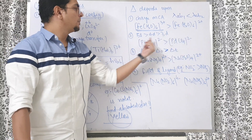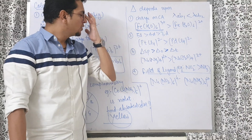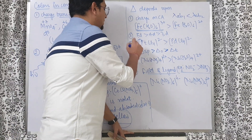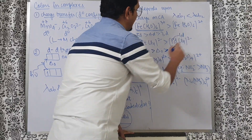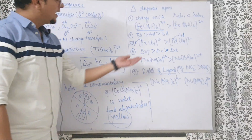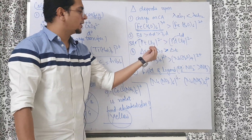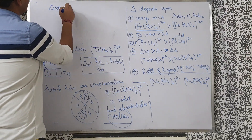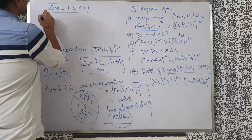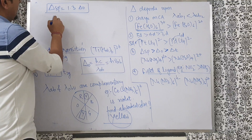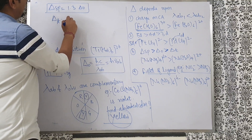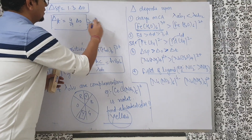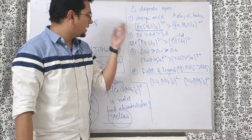The second factor: 5d elements have more Δ than 4d, which have more than 3d. So [PtCl4]²⁻ (Pt is 5d) has more Δ than [PdCl4]²⁻ (Pd is 4d) since both are +2. Third factor is geometry: Δsp = 1.3 × Δo, and Δt = (4/9) × Δo. So the order is Δsp > Δo > Δt — square planar has more splitting than octahedral, which has more than tetrahedral.